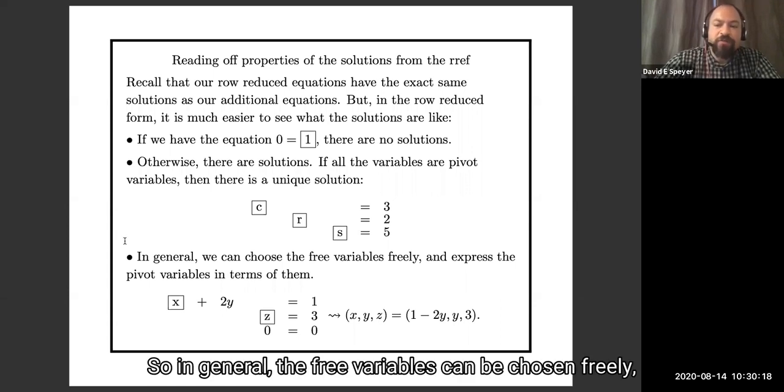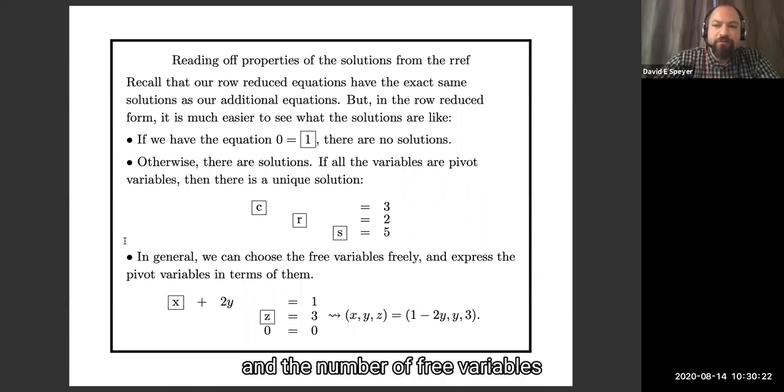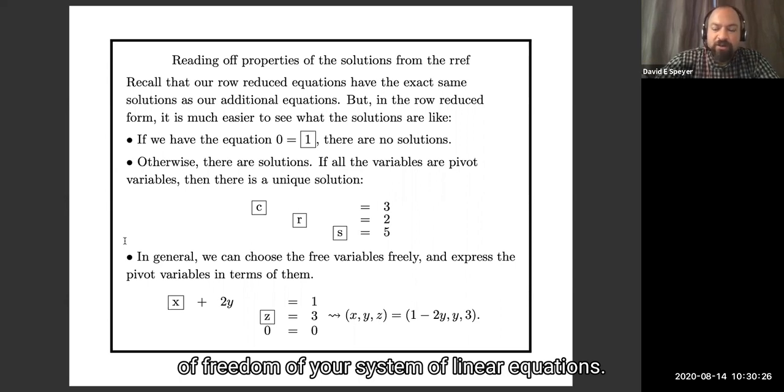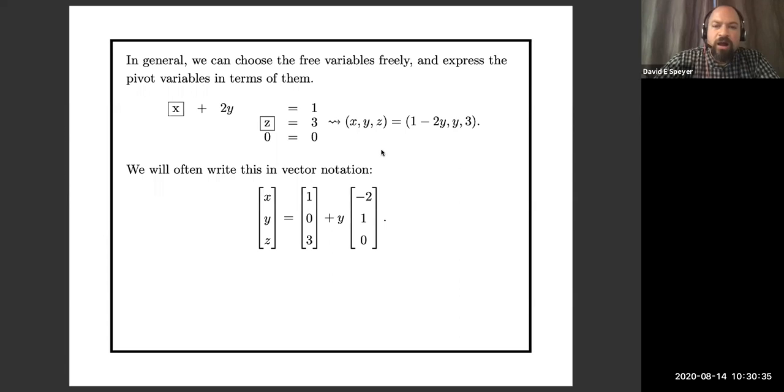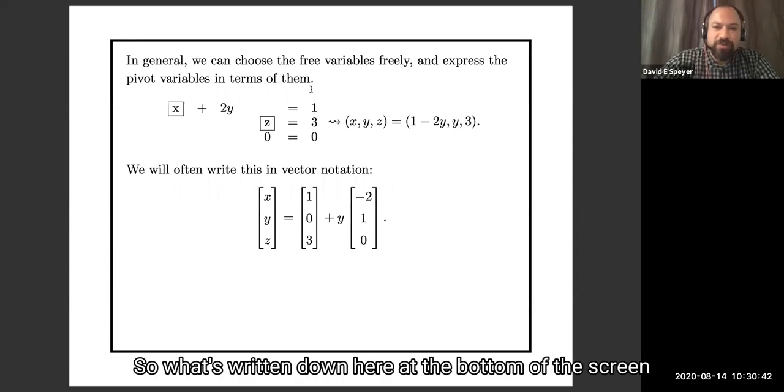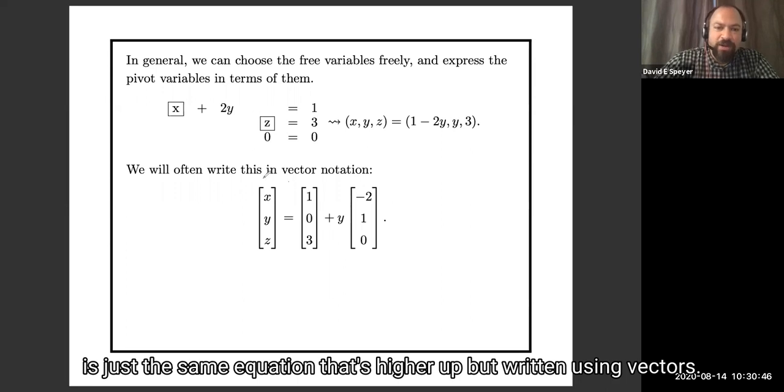So in general, the free variables can be chosen freely. And the number of free variables you should think of as the number of degrees of freedom of your system of linear equations. Then we use them to write the pivot variables. So I just repeated what I said before, I want to note often we will write this using vector notation. So what's written down here at the bottom of the screen is just the same equation that's higher up, but written using vectors.